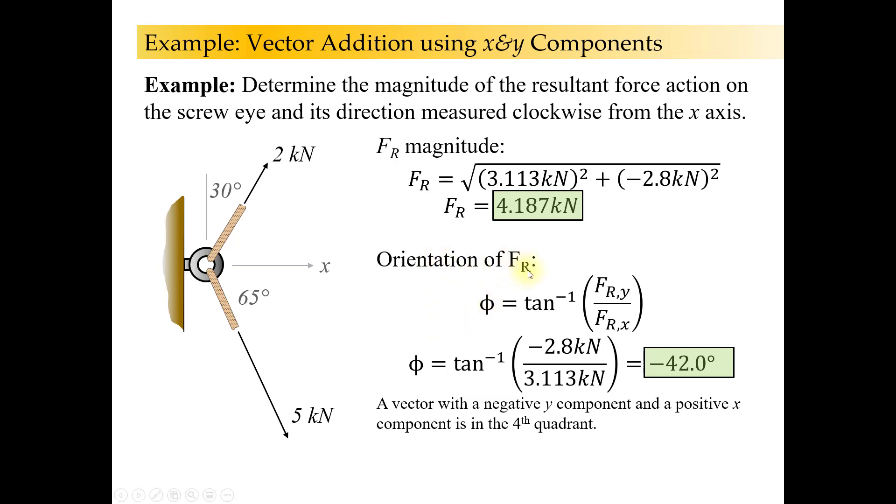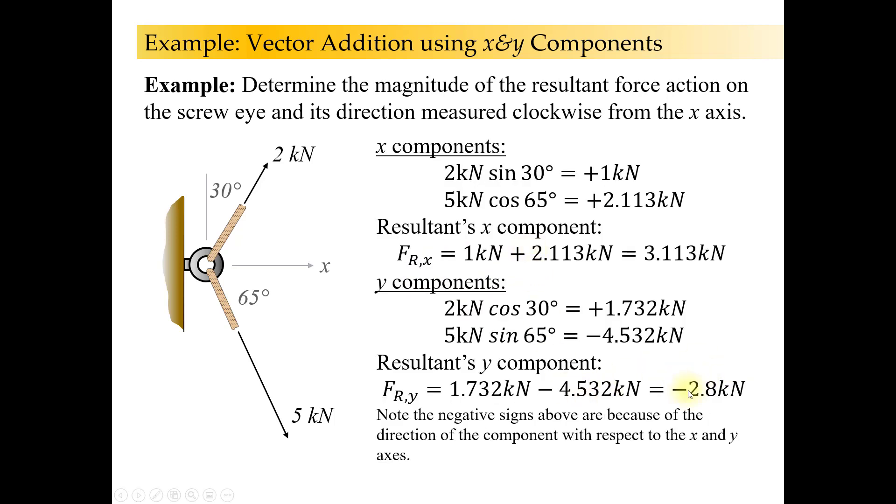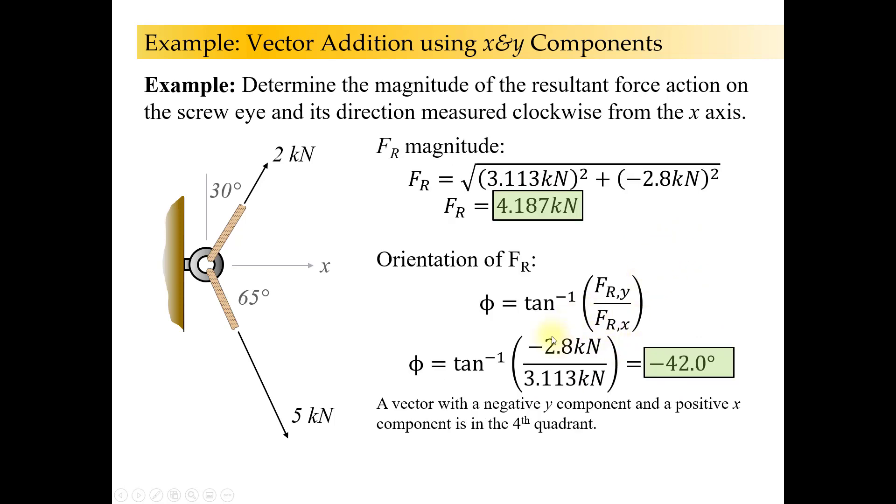The orientation of the resultant force, what we can do is we know the y component, right? Minus 2.8. We know the x component, 3.113. So I can plug them in and do rise over run. So just take the arc tangent of that.